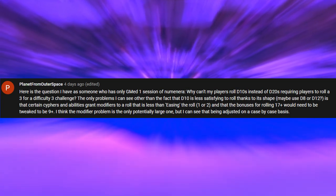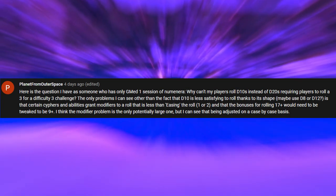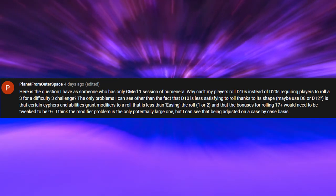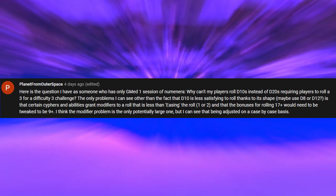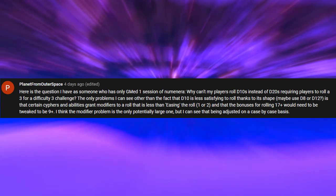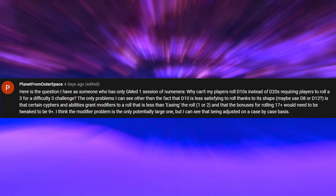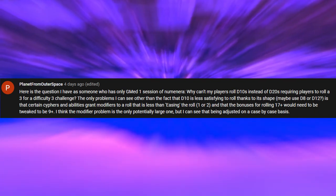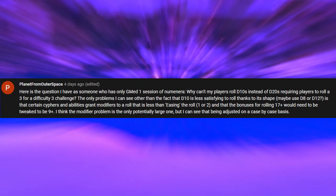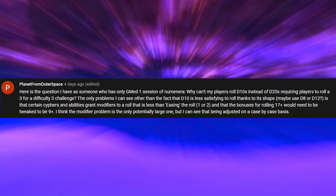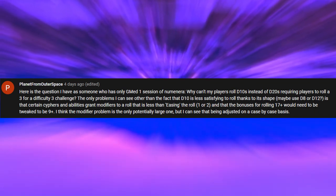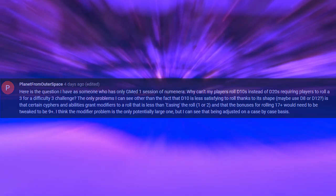Our last question for the week comes from YouTube, with Planet from Outer Space writing: here is the question I have as someone who's only GM'd one session of Numenera. Why can't my players roll d10s instead of d20s, requiring players to roll a 3 for a difficulty 3 challenge? The only problems I can see, other than the fact that a d10 is less satisfying to roll thanks to its shape, is that certain ciphers and abilities grant modifiers to a roll that is less than easing the roll, and that bonuses for rolling 17 and up would need to be tweaked to 9 and up. I think the modifier problem is the only potentially large one, but I can see that being adjusted on a case-by-case basis.